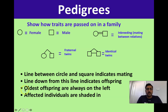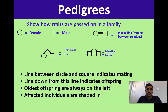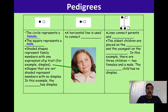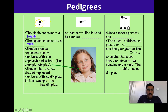A line straight down from an individual always indicates an offspring. We always put the oldest offspring on the left-most side of the pedigree, and younger ones are written further to the right. Affected individuals are always shaded in. In this example, the circle represents a female, the square represents a male, shaded shapes represent family members who express a trait — say, dimples — and open shapes represent members with no dimples, meaning they are not affected.